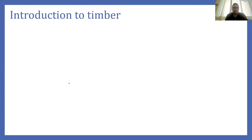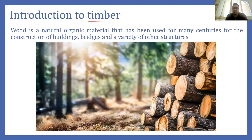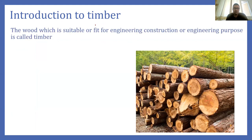Introducing timber: timber is basically wood, and this wood has been used by humans for many centuries for constructing houses, bridges, and various types of structures. Now, what is the difference between timber and wood? The wood which is suitable for use in engineering constructions or for various engineering purposes is known as timber. The wood we use in construction as a structural material is called timber.